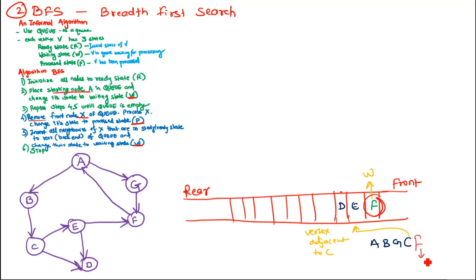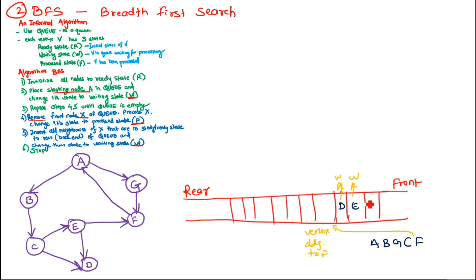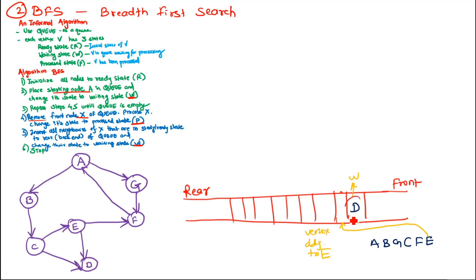F is removed from the queue, its state changes to process state. We search for adjacent nodes of F in the ready state — but the adjacent vertices are already processed, so no new nodes are inserted. Then E is taken from the front, its state changes to process state. For E, adjacent nodes D and F are checked — F is already processed and D is in waiting state, so neither can be inserted.